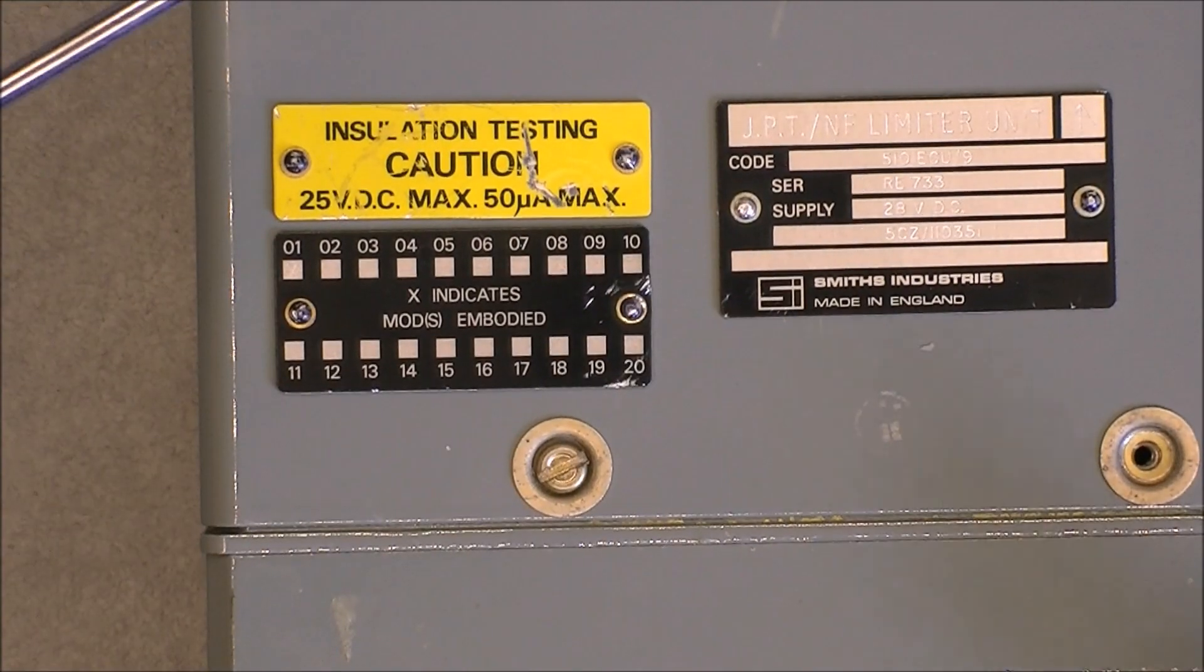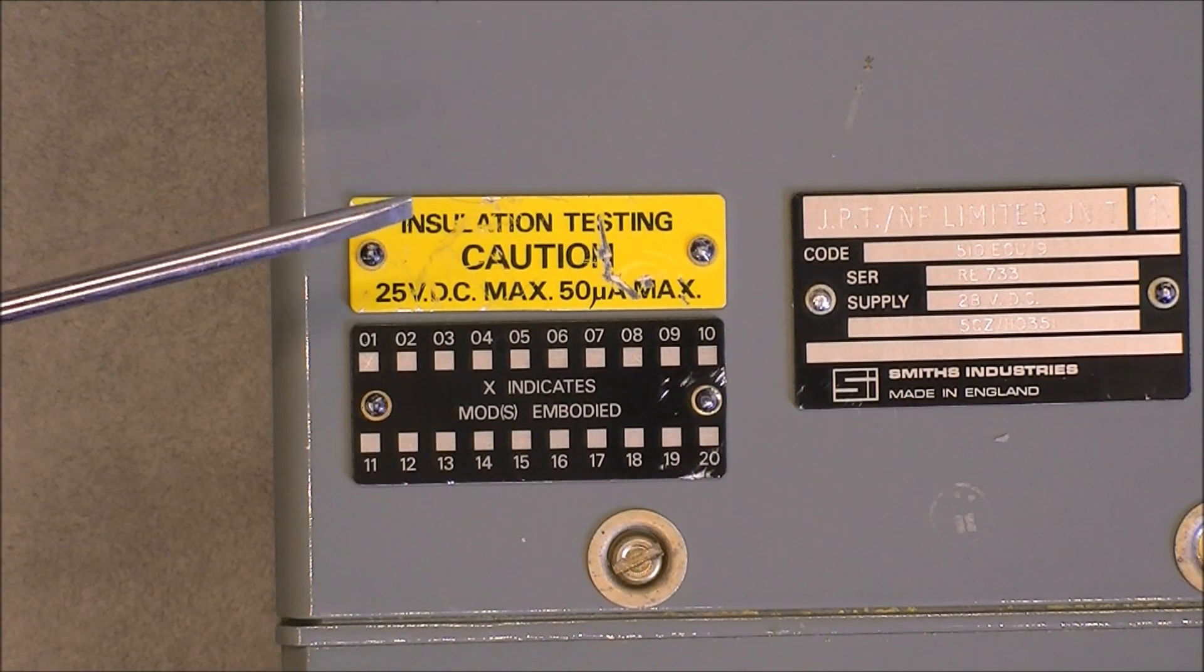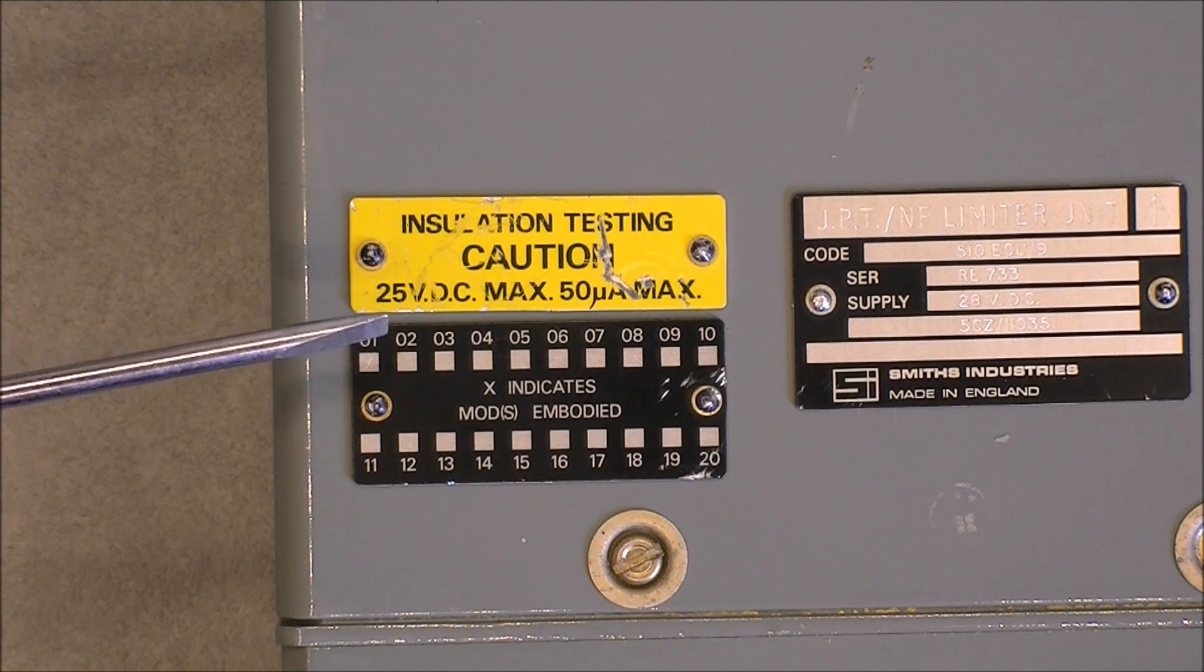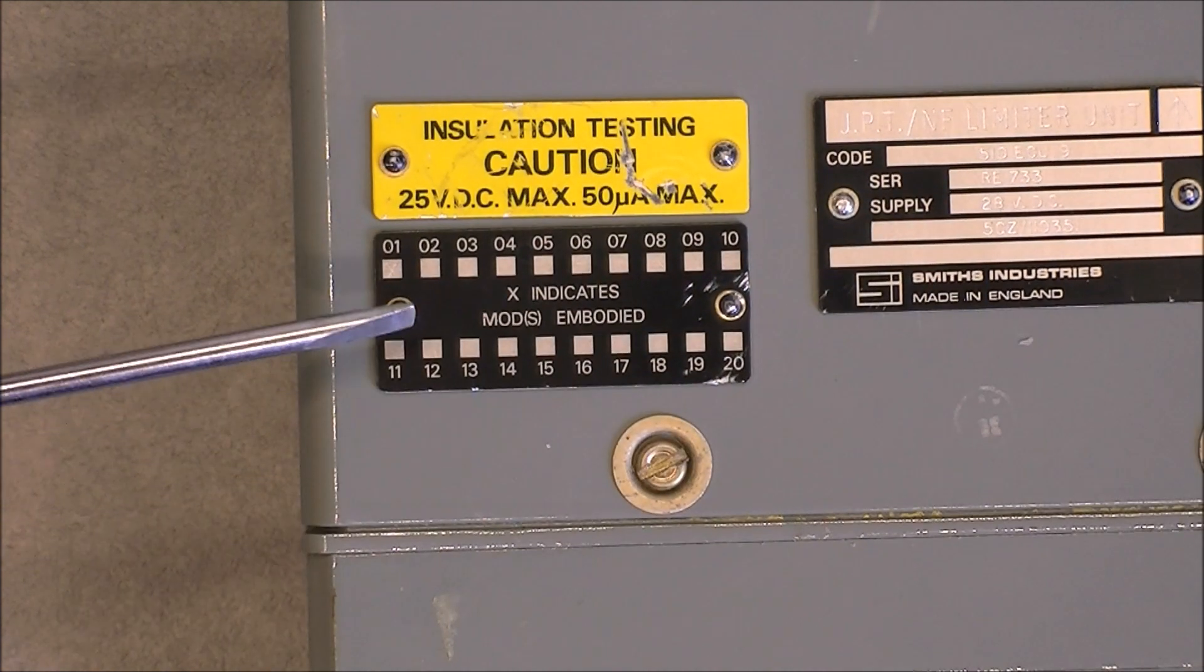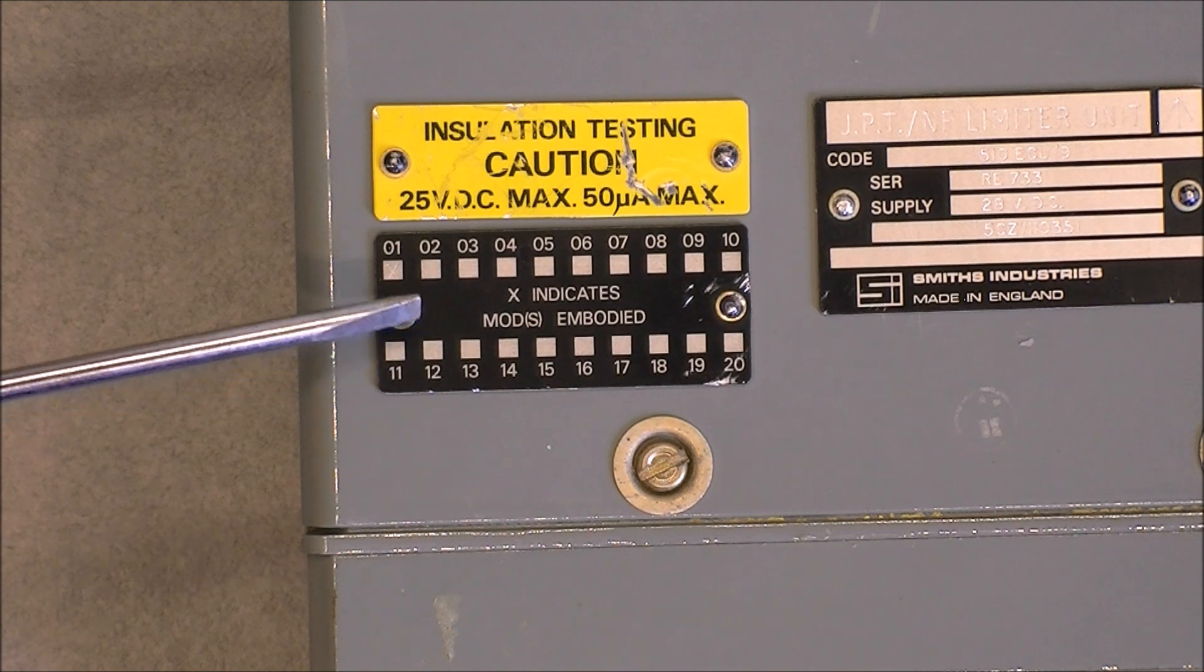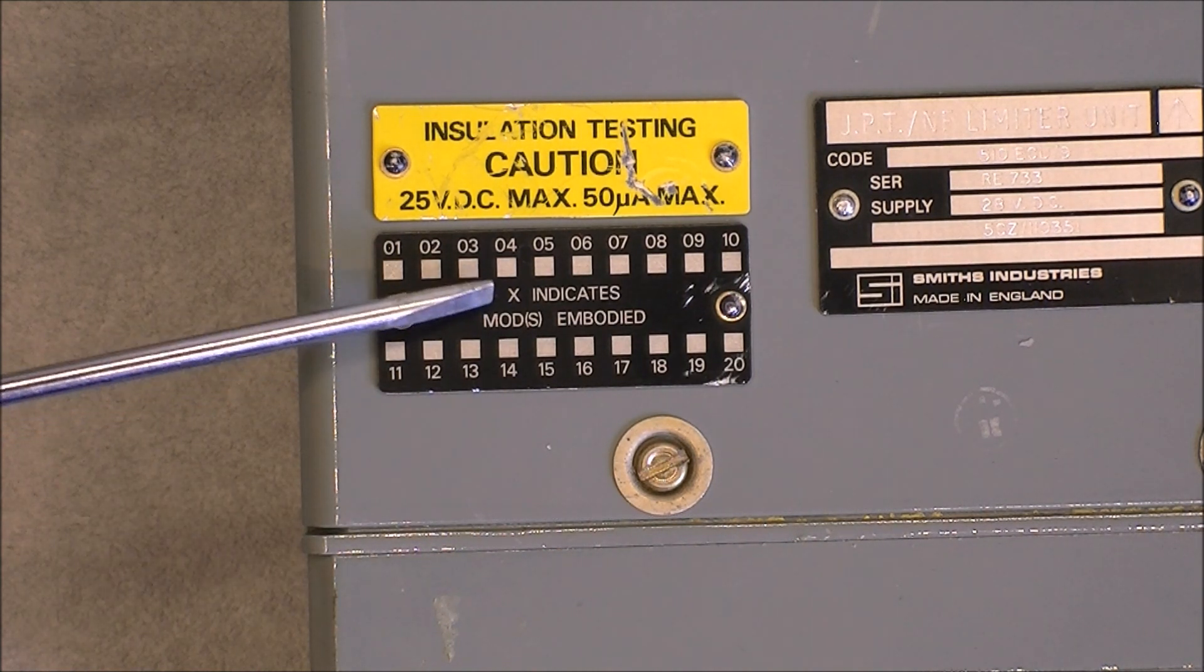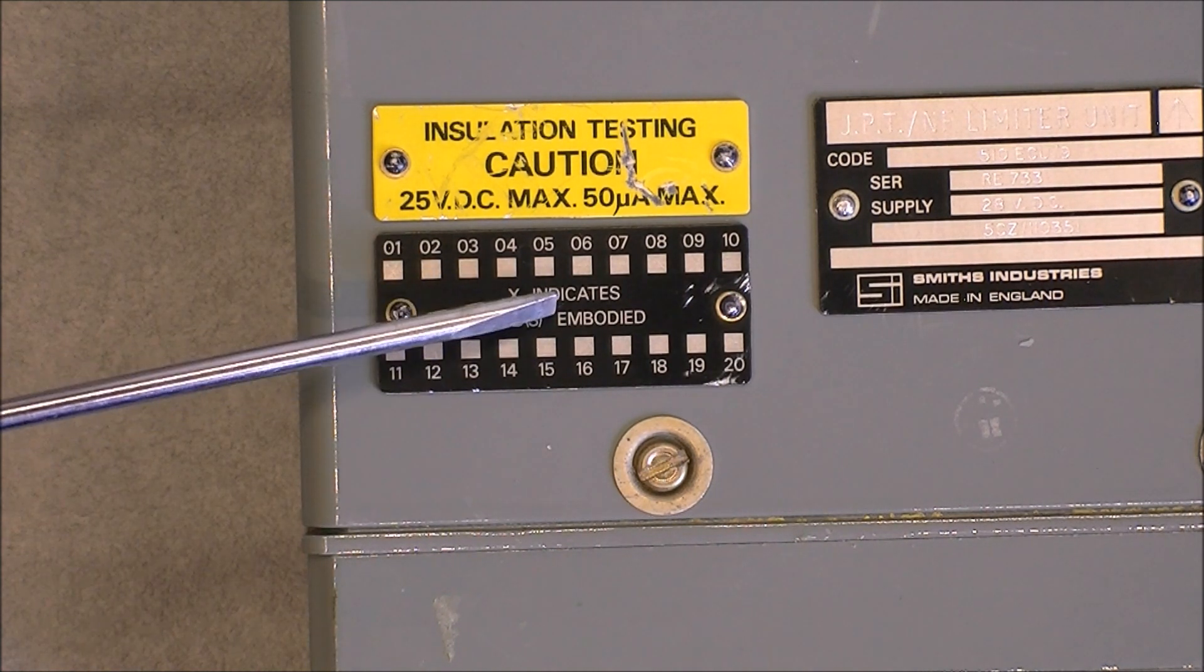Here you have an interesting label with insulation testing maximum 25V DC. And here you have your modification plate with the X that indicates the modes are embodied.